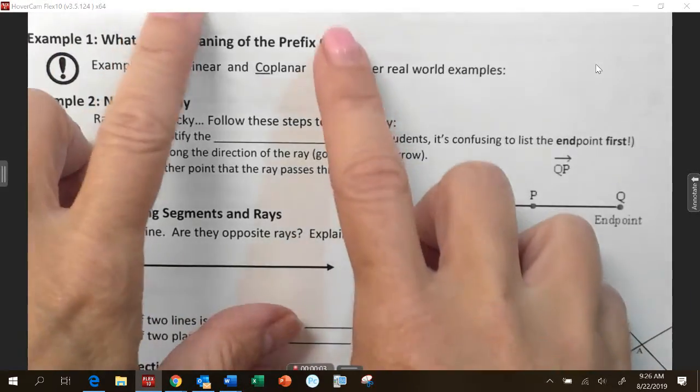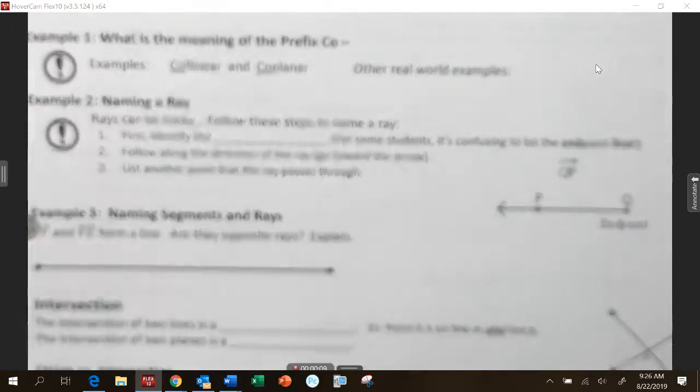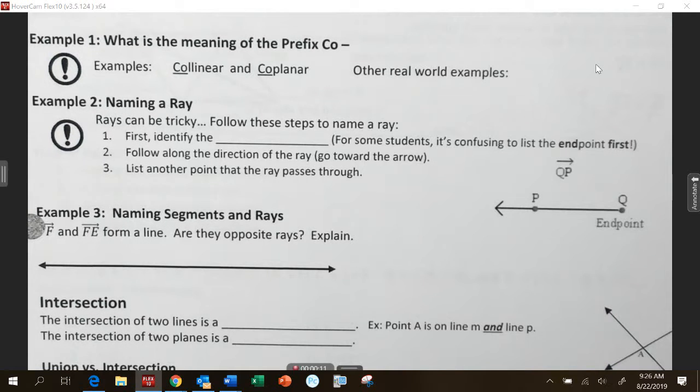All right, collinear and coplanar. When you look at those words, they both have the word co, or the prefix co. And how can we describe co? Together. Together.